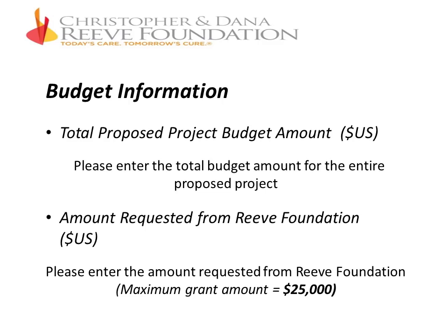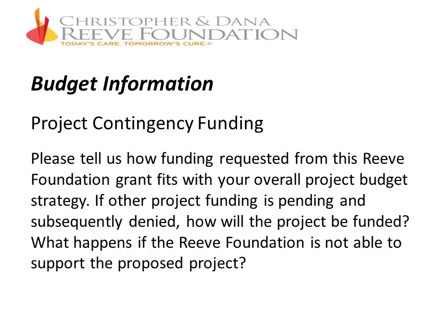For budget information, enter the total proposed project budget amount, and then enter the amount requested from the Reeve Foundation — both in U.S. dollars. The maximum grant award is $25,000. For project contingency funding, please tell us how the funding requested from this grant fits with your overall project budget strategy. If other project funding is pending and subsequently denied, how will the project be funded? What happens if the Reeve Foundation is not able to support the proposed project?